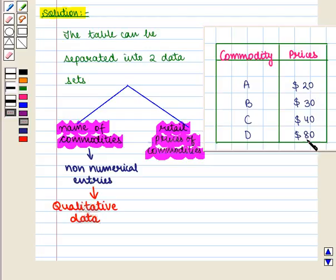And here the suggested retail prices are numerical entries. So these are quantitative data.